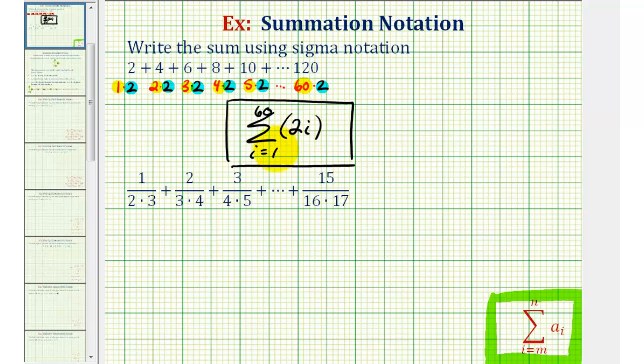Of course we can check this. Notice when i is equal to one, we'd have two times one or two. When i is equal to two, we'd have two times two or four. When i is equal to three, we'd have two times three or six and so on, all the way out to i equals 60 where we'd have two times 60 or 120.